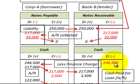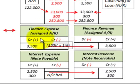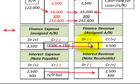Bank B pays out $246,500 to Corporation A. So Corporation A receives $246,500 in cash, which is less than the notes payable of $250,000 — they're receiving less cash, which includes a finance charge, very much like the sale of receivables. Corporation A has a finance expense of $3,500, which is $350,000 worth of pledged accounts receivable times a 1% charge. Bank B recognizes financing revenue of $3,500.